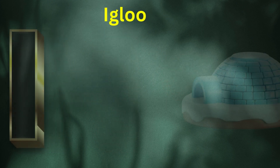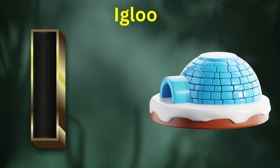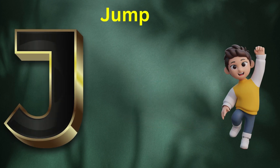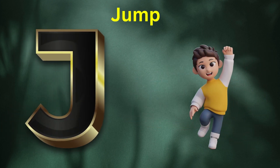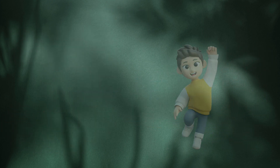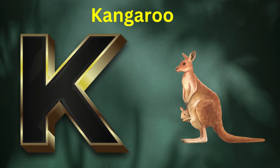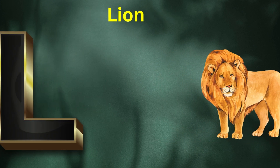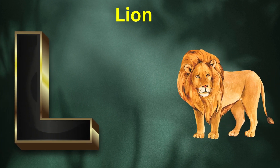I is for Igloo. I-I-Igloo. J is for Jump. J-J-Jump. K is for Kite. K-K-Kite. L is for Lion. L-L-Lion.